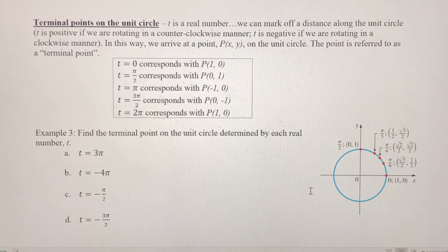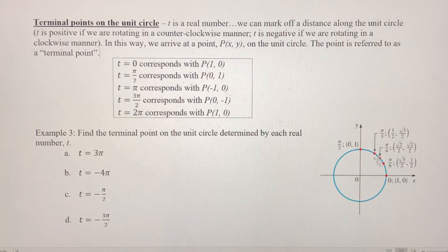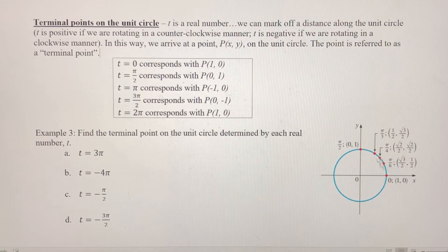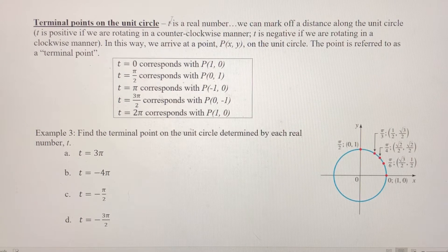In the next video, we'll determine terminal points where we're not on the axis — we're in one of the four quadrants for our value of T.